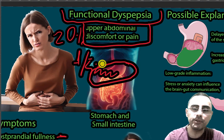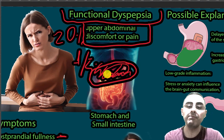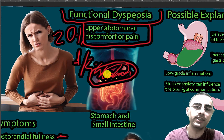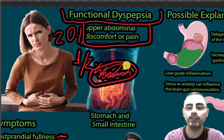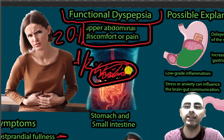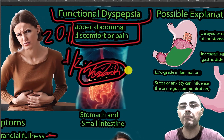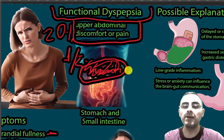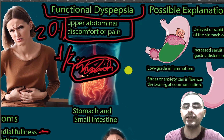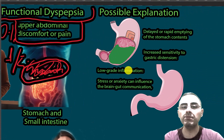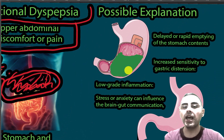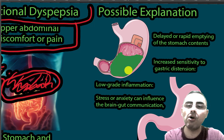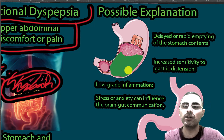Upper abdominal pain is an important characteristic of functional dyspepsia. The pain lasts for several months and sometimes several years, so it is considered a chronic pain condition.